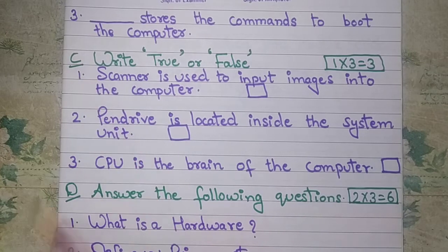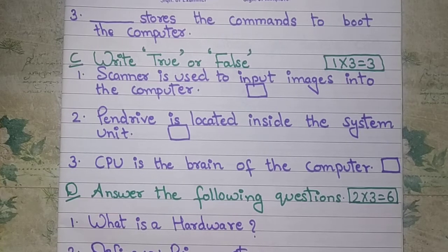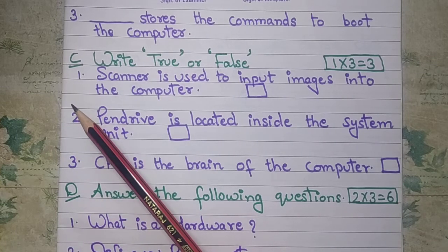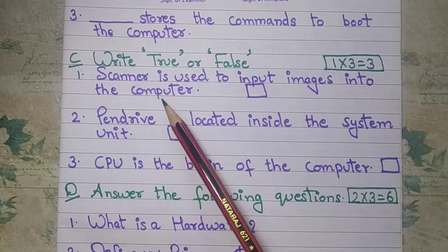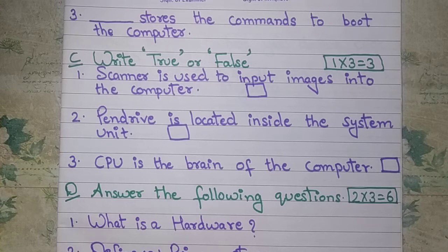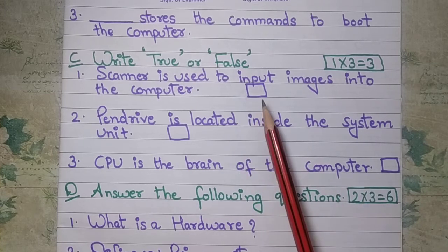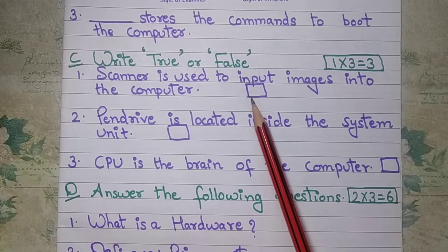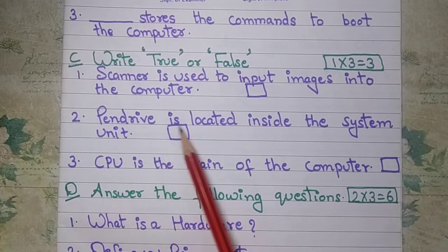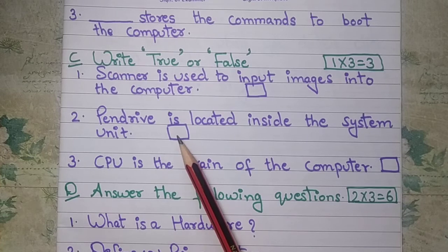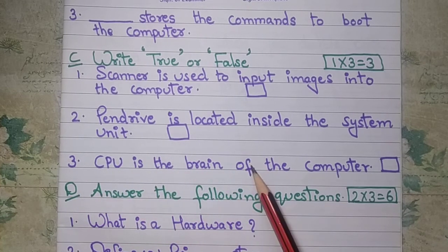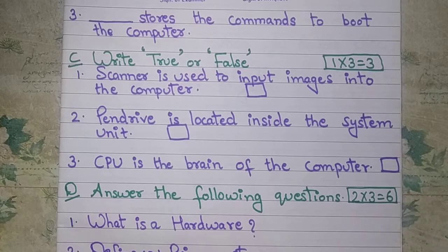Next section is True or False. If the statement is correct write 'T' and if it is wrong write 'F'. First statement: A scanner is used to input images into the computer — write T or F. Second: A pen drive is located inside the system unit — mark it T or F. Third: CPU is the brain of the computer — write T or F in the box.